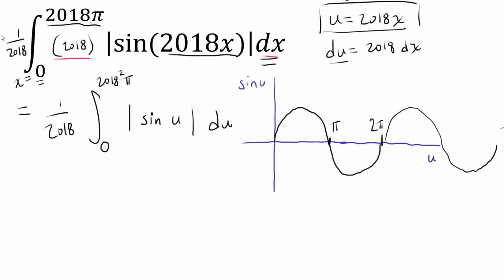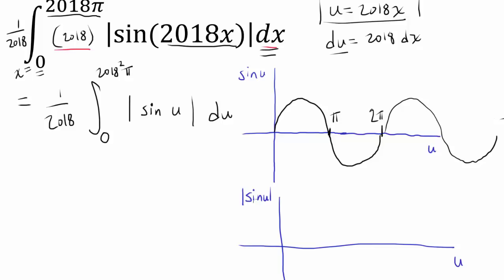Now, what's that telling us about the graph of absolute value of sine of u? How is the graph going to change if we change this to absolute value of sine of u? Well, remember that absolute value changes negatives to positives and keeps positives the same. So we know the positive part of the graph from 0 to π is going to stay the same, but the negative part of the graph from π to 2π is going to be flipped upwards, because negatives are going to be changed to positives.